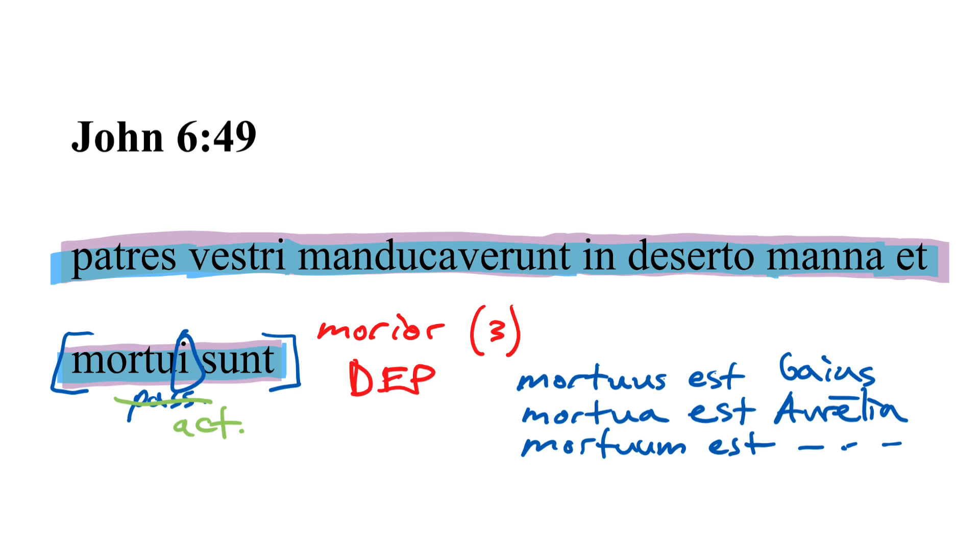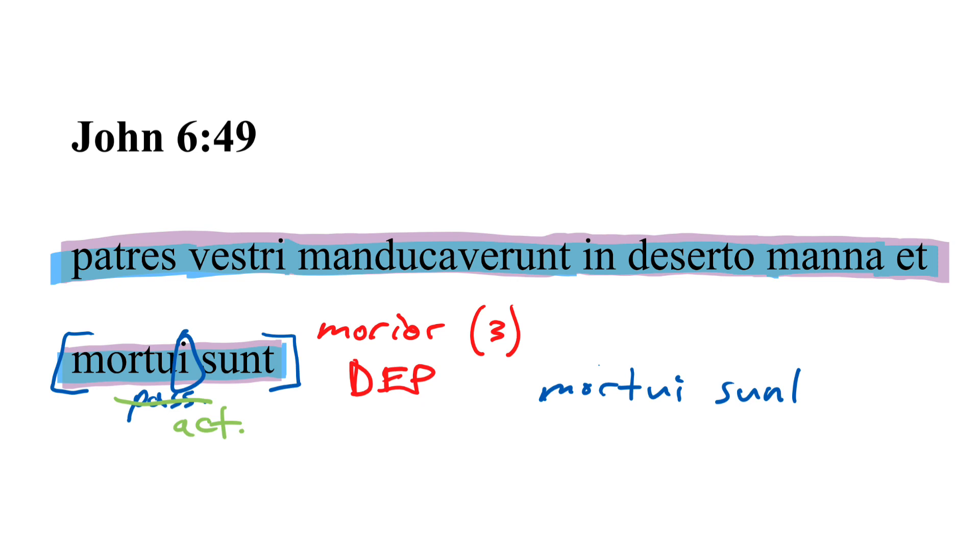So that also means we have to watch out for plural number. When we're talking about multiple people dying, expiring, we have to say mortui sunt. Both parts of that compound verb have to change.